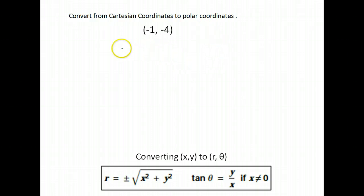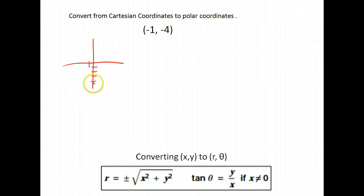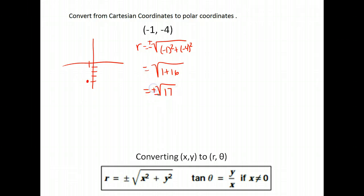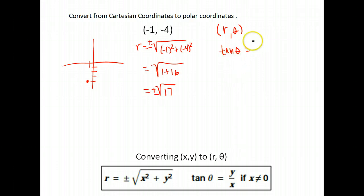This is another example of why it's important to plot first. This is almost the same question, but it's (−1, −4). So plotting that point on the x-y plane, we need to get an answer in the third quadrant. Again we find r: it's the square root of (−1)² + (−4)², so again we get 1 + 16, or √17. For θ, tangent θ equals y over x, so −4 over −1, which gives tangent θ equals 4.